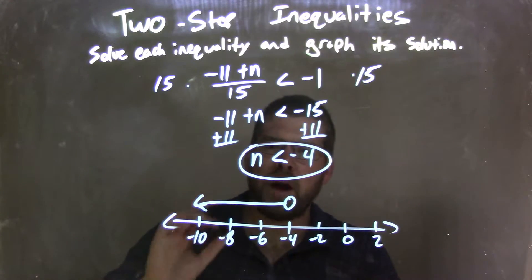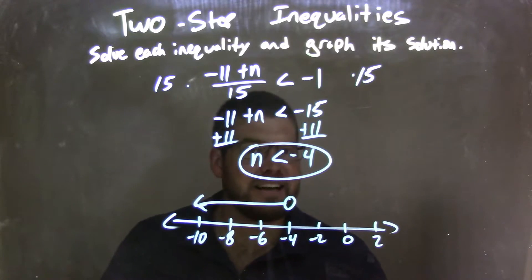Okay. So now I have a graph here that represents and matches our answer of n is less than negative 4.